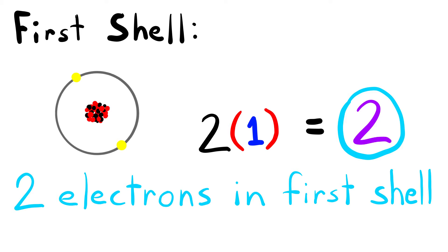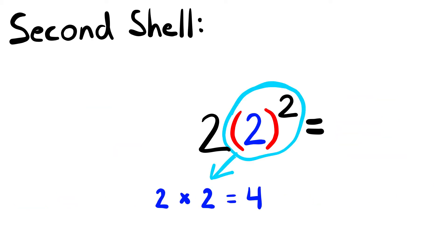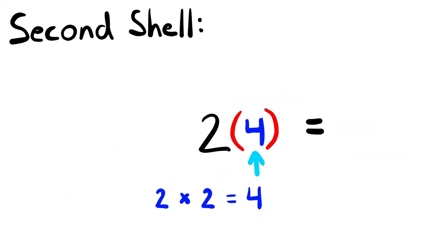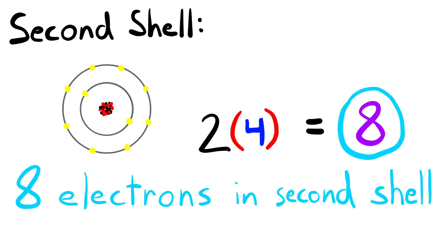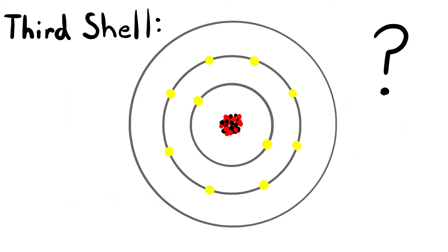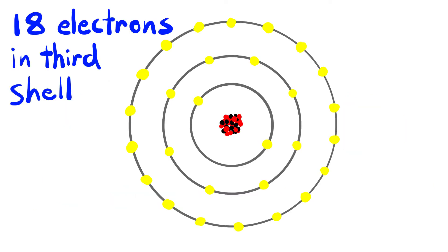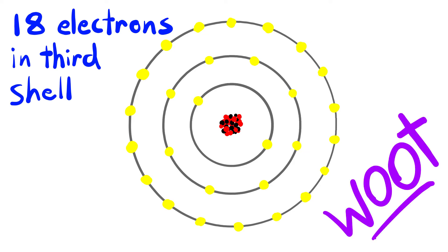Doing the math for our second shell: 2 to the power of 2 equals 4, times 2 equals 8, so our second shell can contain 8 electrons. Go ahead and pause the video for a second and do the math yourself to figure out how many the third shell can contain. That's right — 18! Knowing about the shells and how many electrons they can contain is important for understanding the electrical properties of the element we're dealing with.